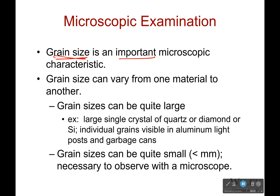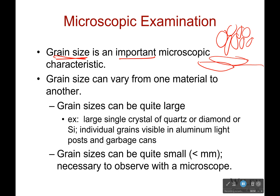Well, one reason is that mechanical properties are going to depend on grain size as well as their shape. We talked about how if the grains are all the same shape or just randomly oriented, then the material properties don't change in a particular direction. However, if the grains are long and thin in one direction, material properties are going to depend on the grain's direction and therefore on the direction that you apply a force.